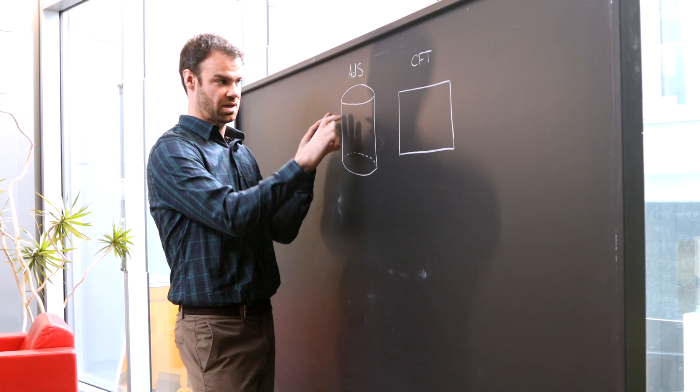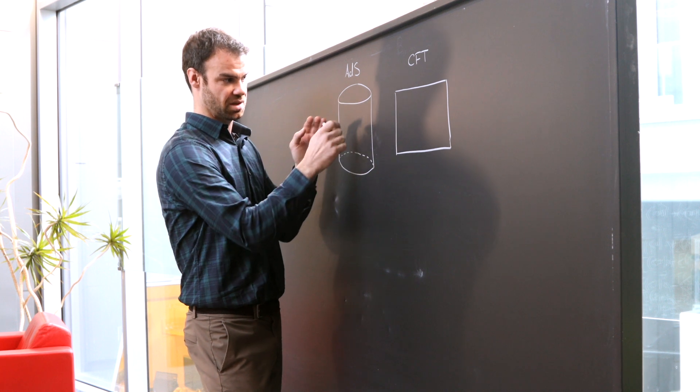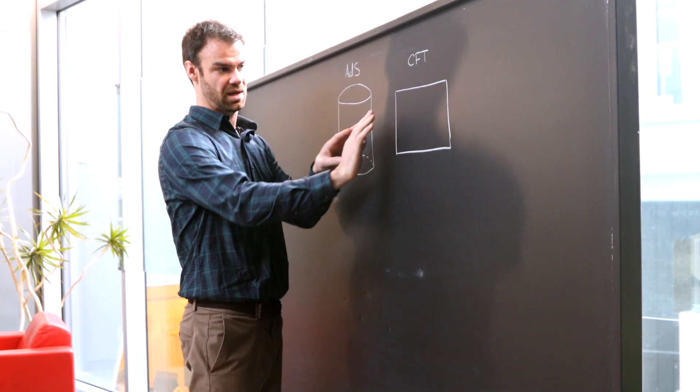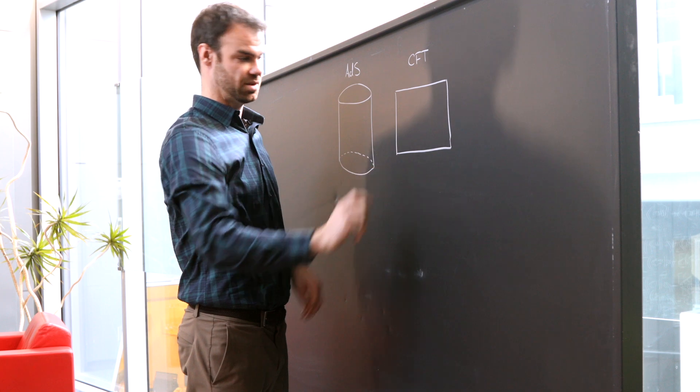So the picture here is like I've taken the boundary of this cylinder and I've sliced it open and I've rolled it out on the page and that's this thing here.